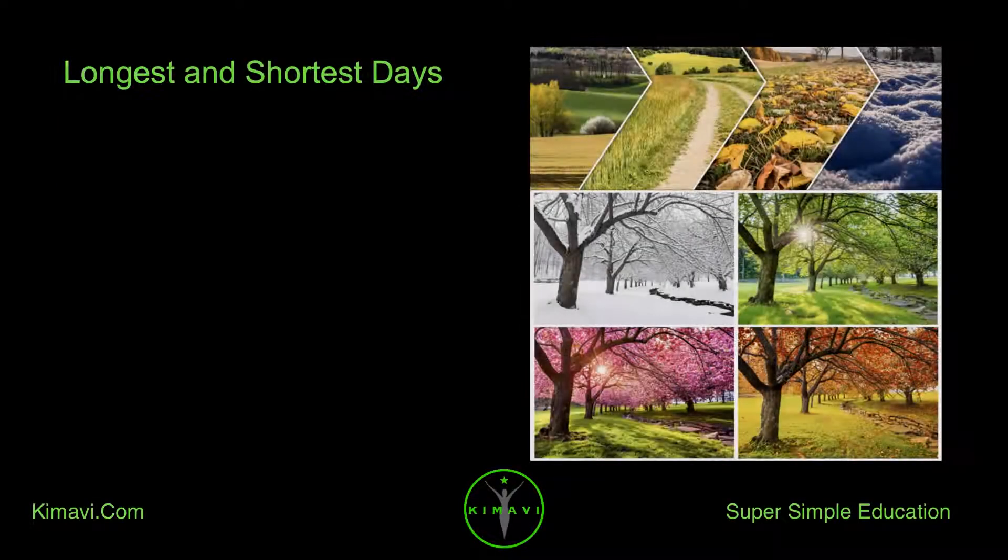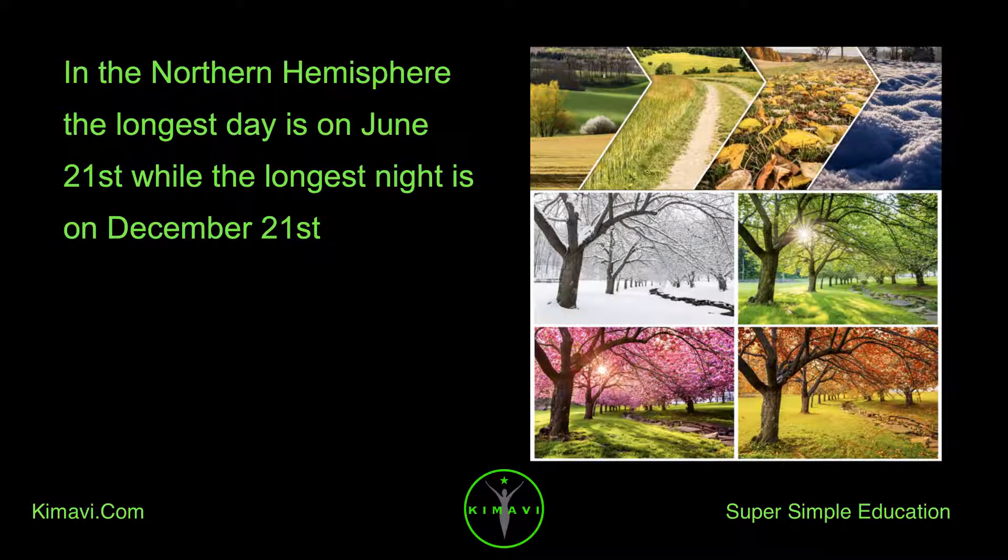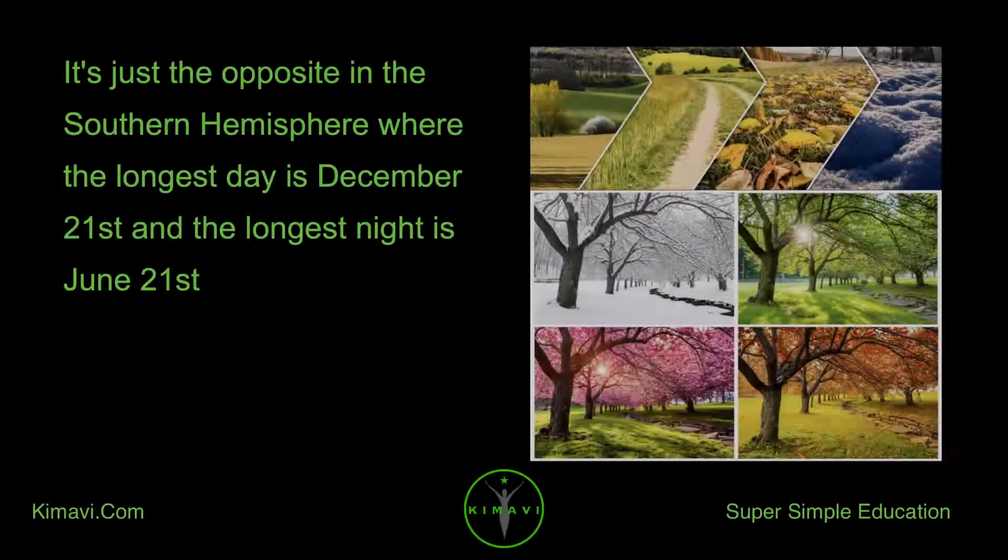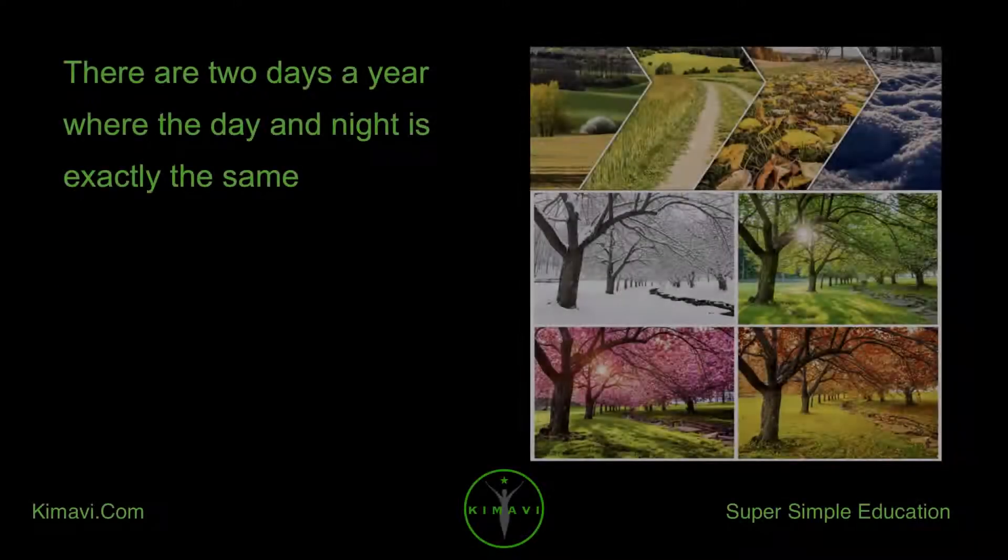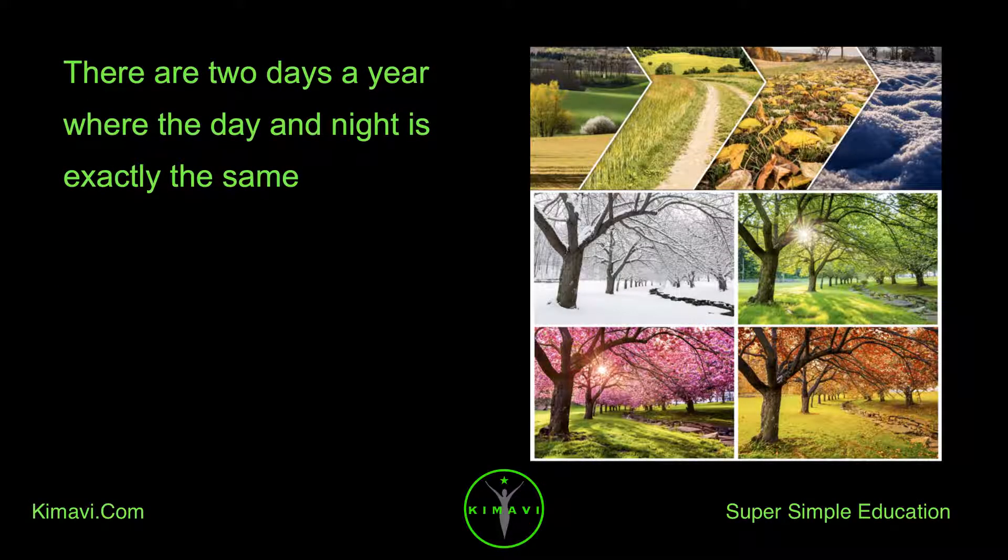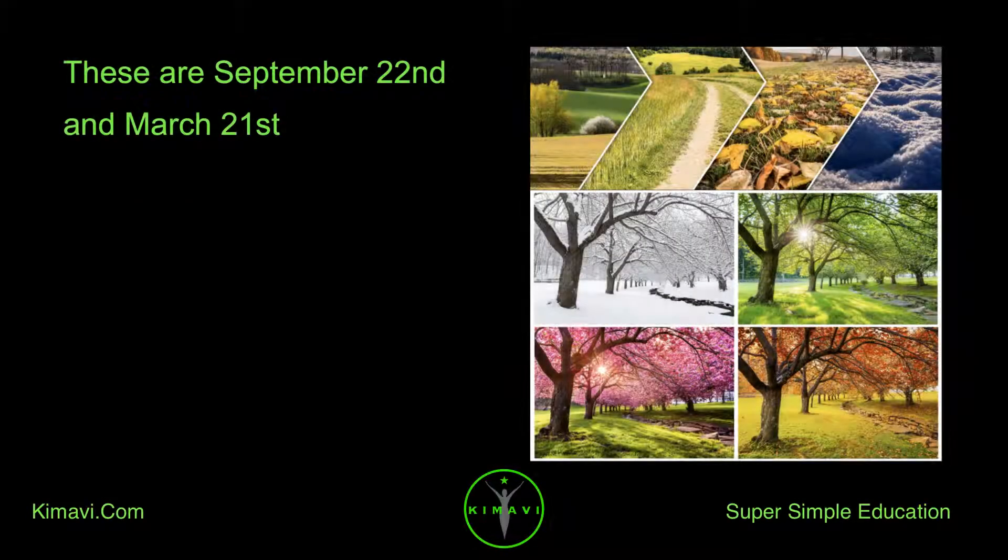Longest and shortest days. In the Northern Hemisphere, the longest day is on June 21, while the longest night is on December 21. It's just the opposite in the Southern Hemisphere, where the longest day is December 21 and the longest night is June 21. There are two days a year where the day and night is exactly the same. These are September 22 and March 21.